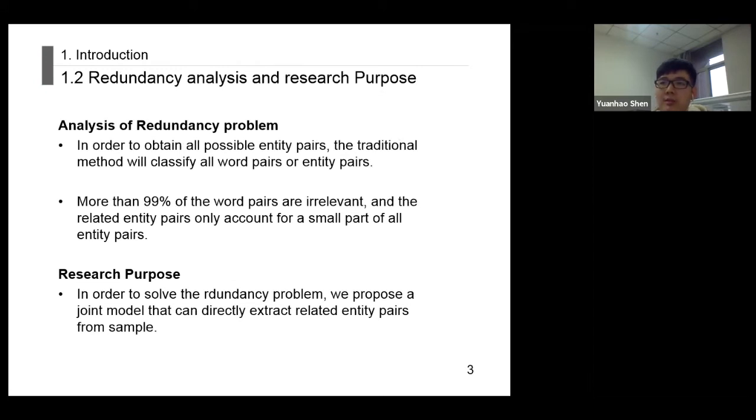The redundancy problem means that the model generates and classifies a large number of unrelated entity pairs. Why does this happen? After analysis, this is because in order to obtain all possible entity pairs, the traditional method classifies all word pairs or entity pairs, and the vast majority of these pairs are not related. Based on the above analysis, our research goal is to propose a joint model that can extract related entity pairs from samples without generating redundancy information.